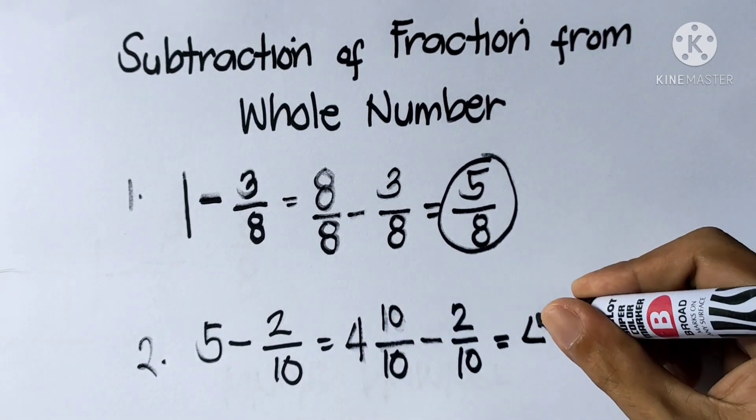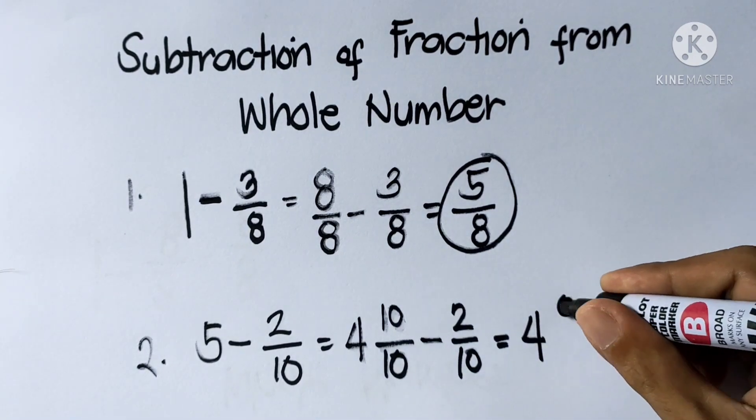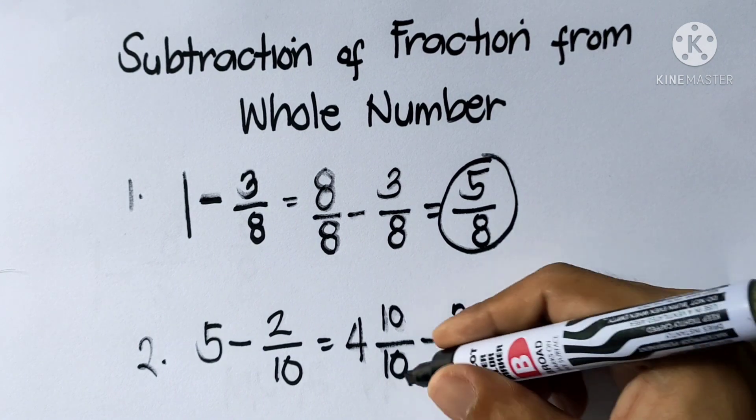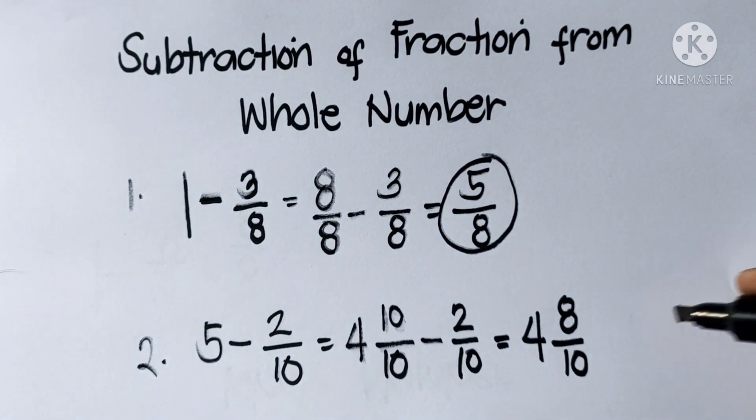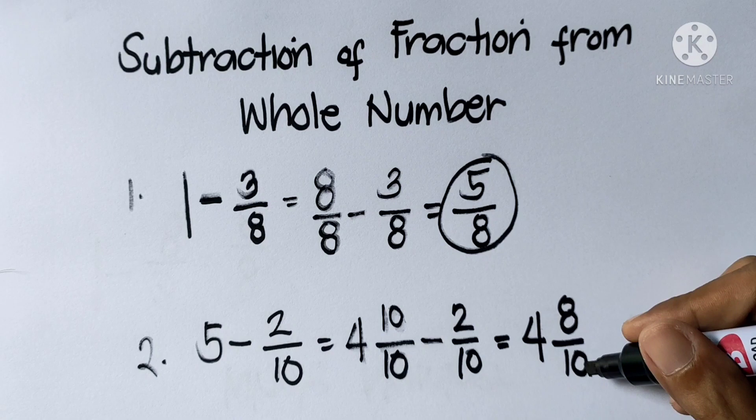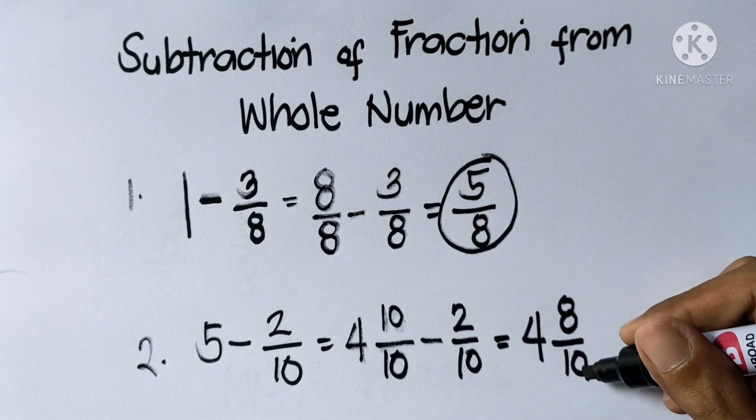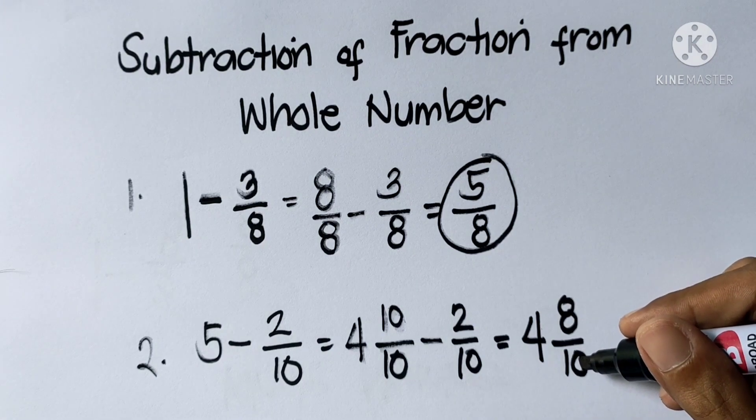Copy the whole number 4. 10 minus 2 is 8, then copy the denominator which is 10. So the answer is 4 and 8 over 10. But it's not the final answer, because 8 over 10 still has a lowest term. We always need to simplify the answer.